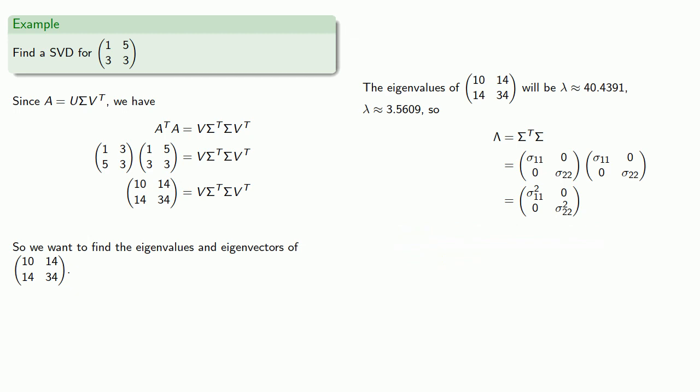Now meanwhile, lambda is the diagonal matrix of eigenvalues, and we have a choice here. We can put the eigenvalues in any order that we want to. And for reasons that will become clear later on, it's convenient to set them down in descending order. So while lambda could be any diagonal matrix whose entries are the eigenvalues, the one we'll actually want to use is this one. And by a direct comparison of the entries, we can find both sigma 1, 1 and sigma 2, 2.